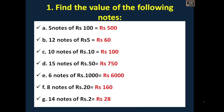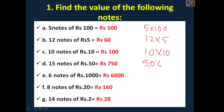Find the value of the following notes. 5 notes of 100 rupees: 5 into 100 = 500 rupees. 12 notes of 5 rupees: 12 into 5 = 60 rupees. 10 notes of 10 rupees: 10 into 10 = 100 rupees. 50 rupee note into 15 = 750 rupees. 6 into 1000 = 6000 rupees. 8 into 20 = 160 rupees. 14 into 2 = 28 rupees. For all these you have to mention rupees.